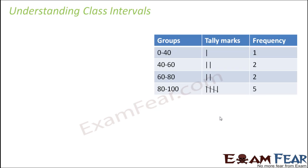Let us have a look at a grouped frequency distribution table. So the table would look somewhat like this: 0 to 40 has frequency 1, 40 to 60 has frequency 2, 60 to 80 has frequency 2, and 80 to 100 has frequency 5. So you see that it is a normal frequency distribution table, just that you have divided the data into groups so that you can have some frequency for each of them.